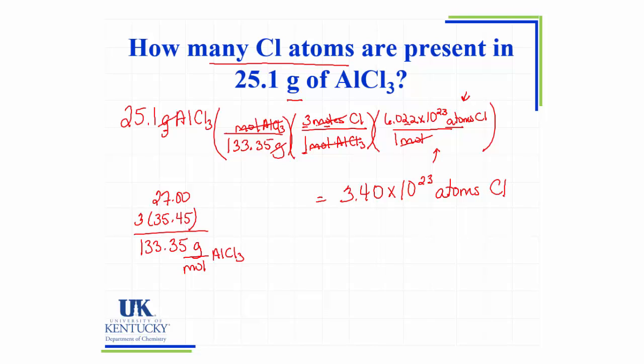Even though we have multiple steps in the problem, the thing that kept me moving was looking at the units. I converted to moles from grams, then I used my mole ratio between the moles of the compound and the moles of the chlorine atoms in that compound, and then I used Avogadro's number — atoms per mole — to find the number of atoms of chlorine.